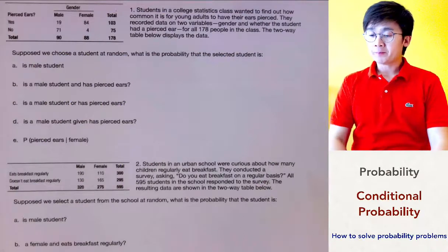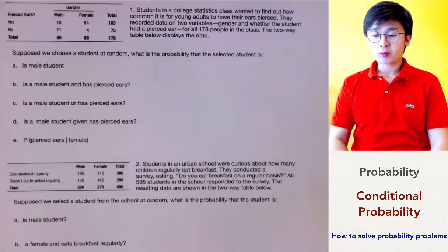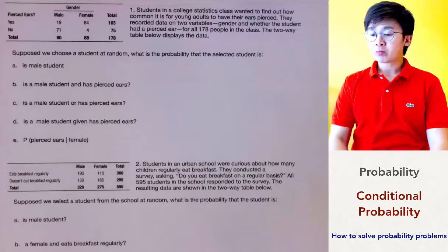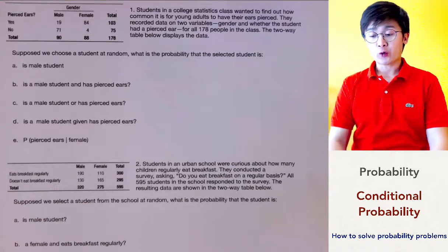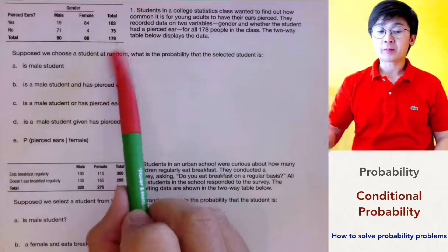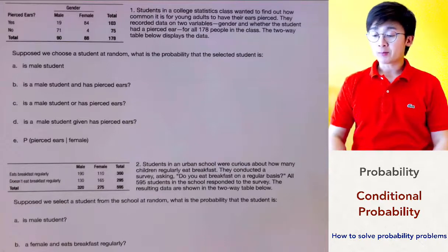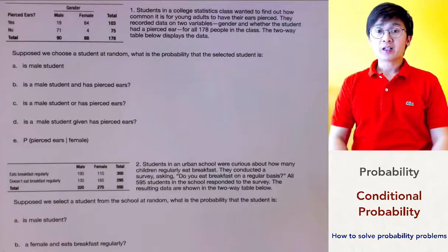We're going to be answering probability questions involving conditional probability. On the first problem, we are given a table. In this table, it represents students who have been asked if they have ear-piercing or no ear-piercing. It's divided between the male and the female students. The total number of participants in this particular experiment was 178 students, and that will be our total sample space for the survey.